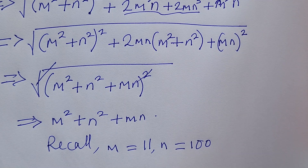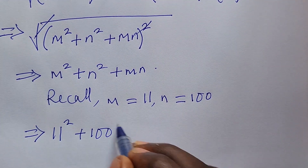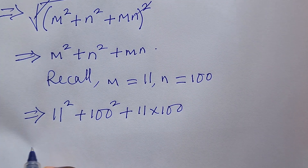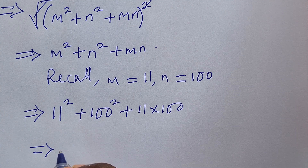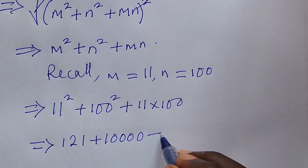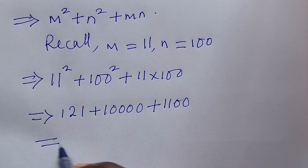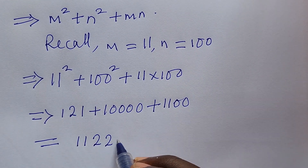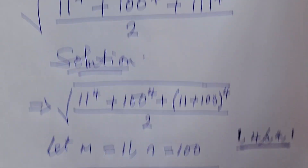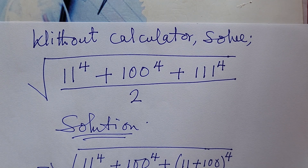Substituting back, we get: 11² plus 100² plus 11 times 100, which equals 121 plus 10000 plus 1100. Adding everything together gives us 11221. So the final answer to our math olympiad challenge — the square root of (11^4 plus 100^4 plus 111^4) all over 2 — is 11221.